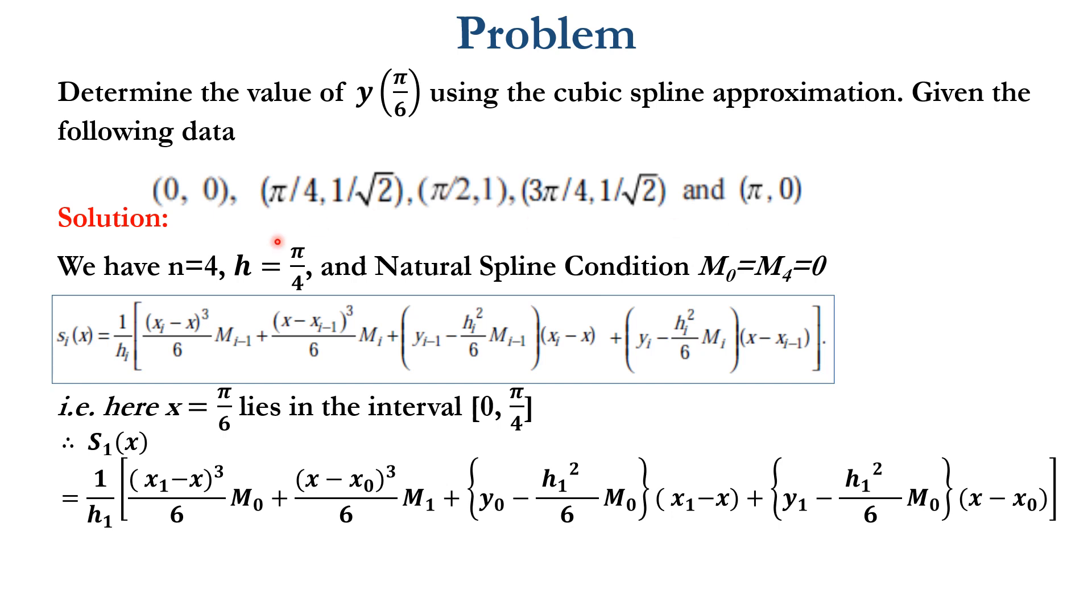In this problem we have total five points, so n is equal to 4. The spacing between each interval, the difference between x values in each interval, is π/4. We know the natural spline conditions M₀ = M₄ = 0.